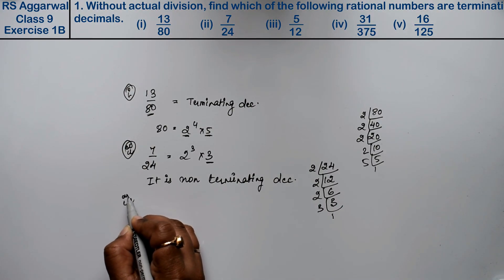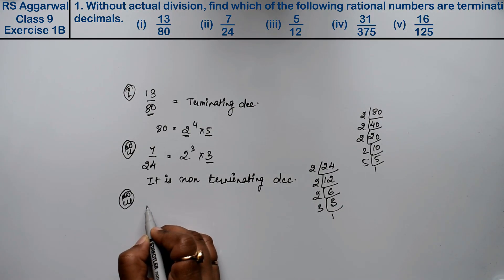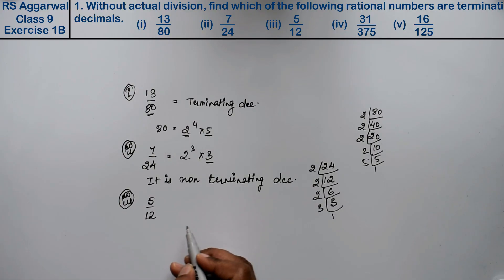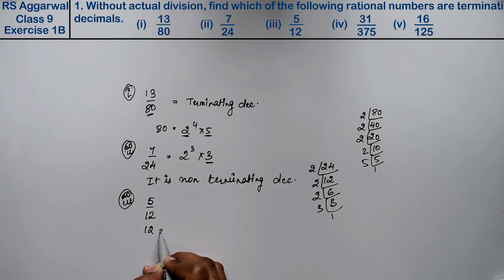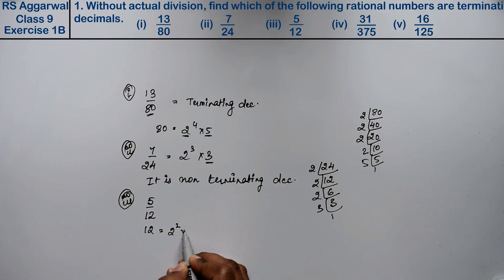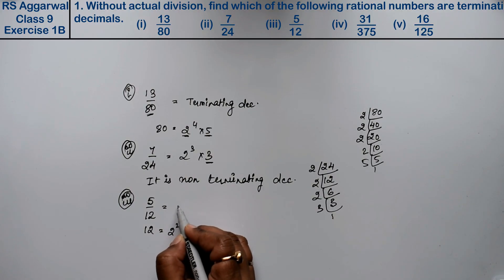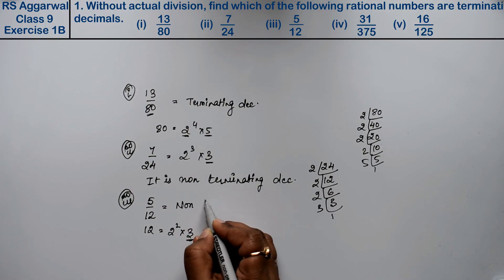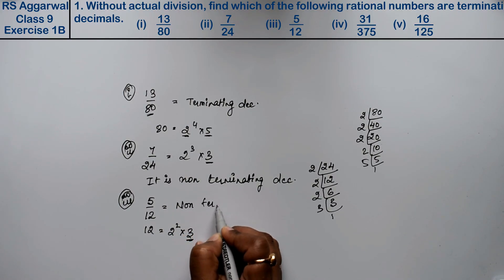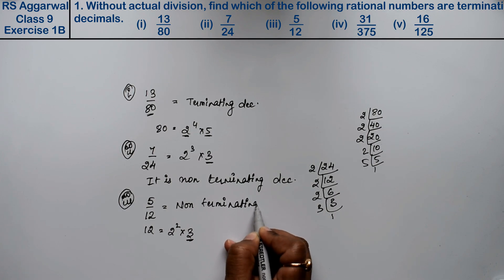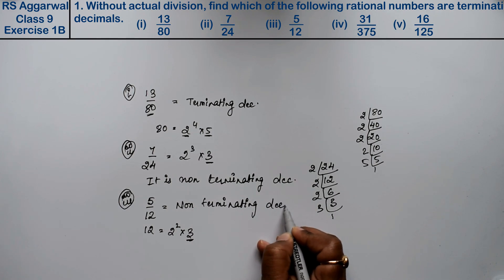Let's do the third part. The third part is 5 upon 12. For 12, we get 2 to the power 2 into 3, so 12 = 2² × 3. Again, 3 is coming, which means it is a non-terminating decimal.